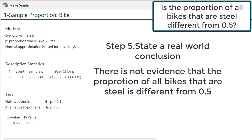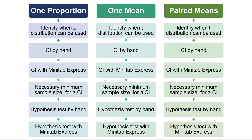We just covered all of the learning objectives for one proportion. Now is a good time to take a break. One proportion confidence intervals and tests are covered in section 6.1 of the LOC5 textbook. You may want to go to Wiley Plus to do all of the questions tied to chapter 6, section 1 before moving on. Now, we're going to go through the same six learning objectives with one mean. Pay attention to the similarities.